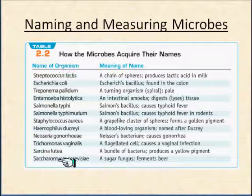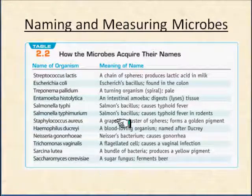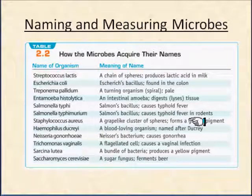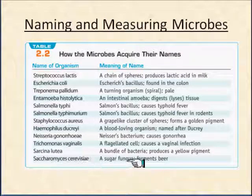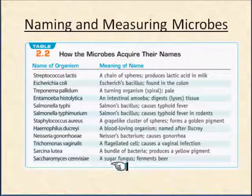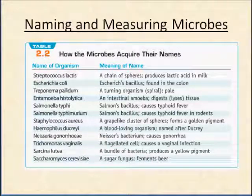Staphylococcus aureus — staph are grape-like clusters of spheres and they form a gold pigment; aureus means gold. We have Saccharomyces cerevisiae, which is a sugar fungus, and cerevisiae means beer — so it ferments beer. You get kind of an idea of how these organisms are named.